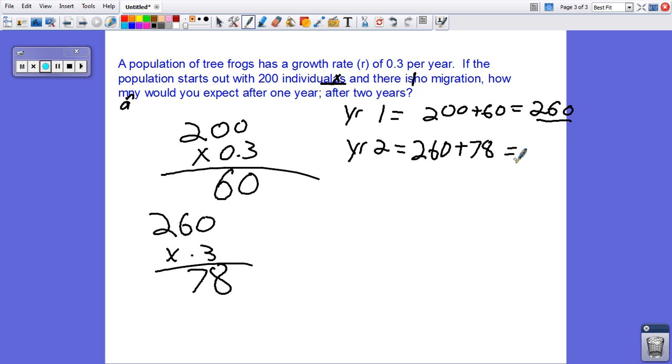So with 260 plus 78, who's my fast math person? 338.